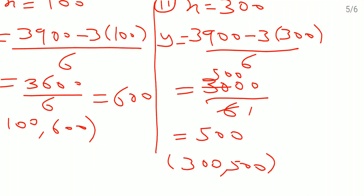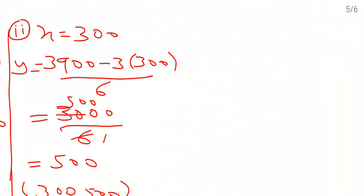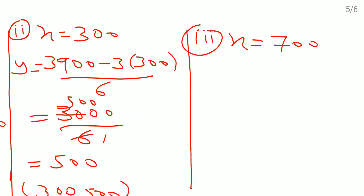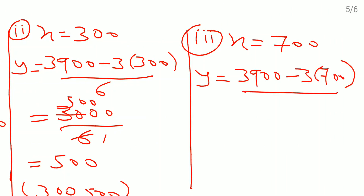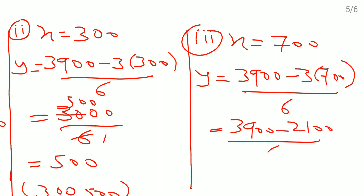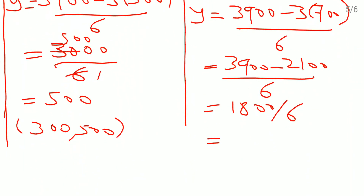Now I will go for the third solution. I will take x = 700, so y = (3900 − 3 × 700) / 6 = (3900 − 2100) / 6 = 1800 / 6 = 300. So the third solution is (700, 300).